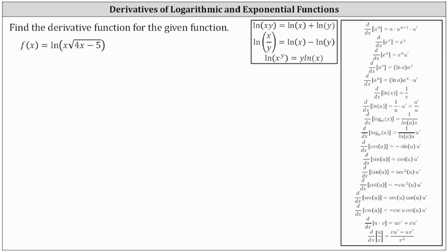We're asked to find the derivative function for the given function. We have f of x equals natural log of x times e square root of the quantity four x minus five. Notice how we do have a composite function here, so we could let u equal the inner function of x times e square root of the quantity four x minus five.